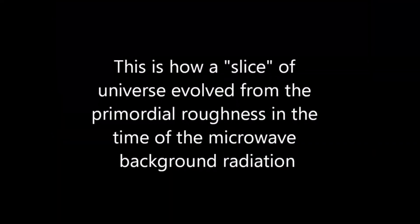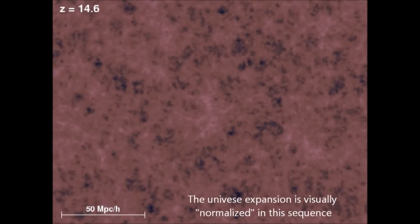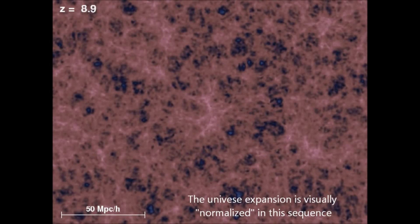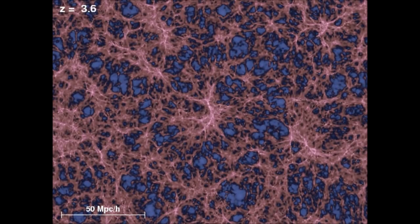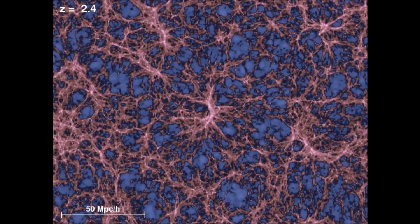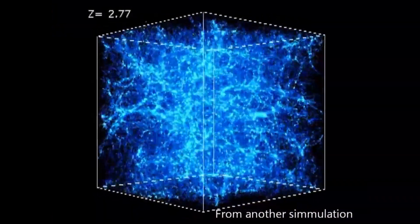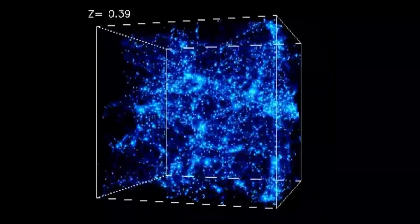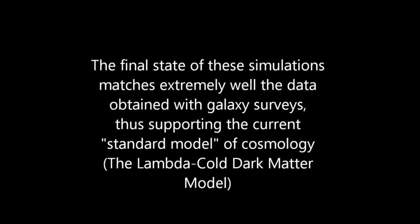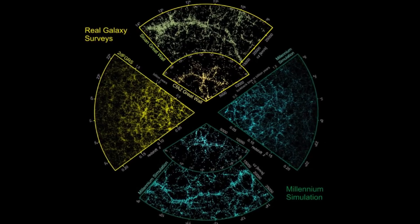This is how a slice of universe evolved from the primordial roughness in the time of the microwave background radiation. The universe expansion is visually normalized in this sequence. The final state of these simulations matches extremely well the data obtained with galaxy surveys, thus supporting the current standard model of cosmology.